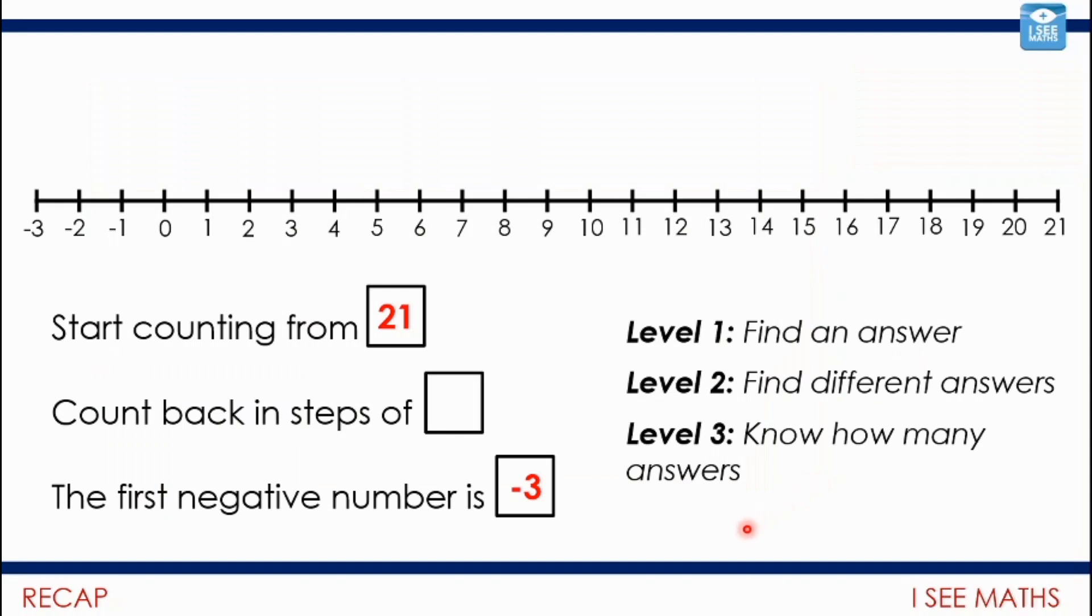And then one more recently. So this was last week. And this was your how many ways challenge. Start counting from 21. Count back in steps of what could it be? The first negative number is minus three. So we had this gap, this gap from negative three all the way up to 21. Now that is a gap of 24, 21 there, another three, 24. So how many answers?